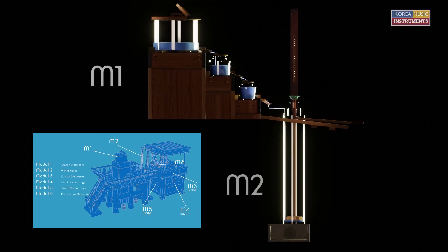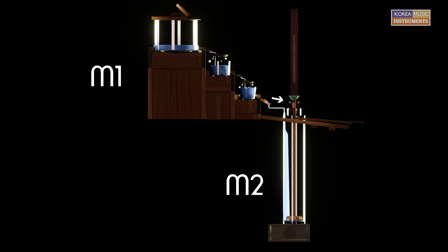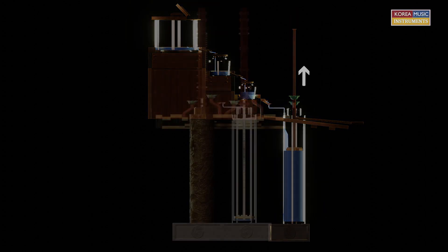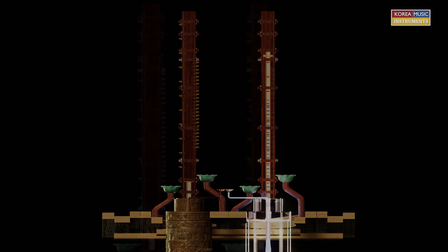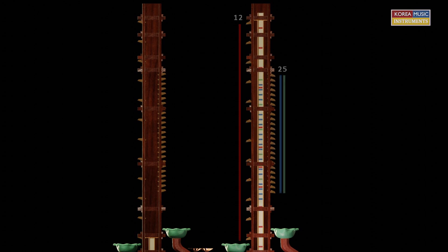Module 2. The water from the lowest container of module 1 flows via a pipe system into the large container in module 2. In the container is a float, on this float is a measuring rod. The rod floats upwards and turns several flaps. There are 12 flaps on one side and 25 flaps on the opposite side. The 12 flaps are activated one after the other in a two-hour rhythm. This corresponds to a 24-hour day.